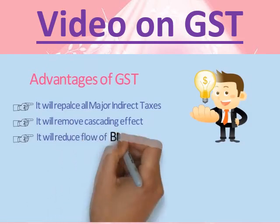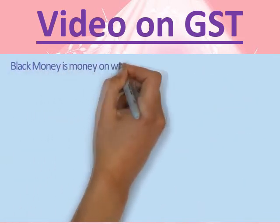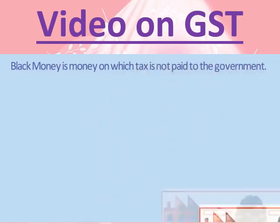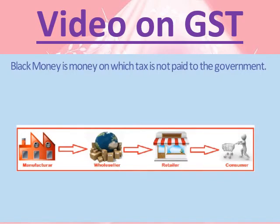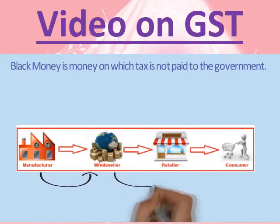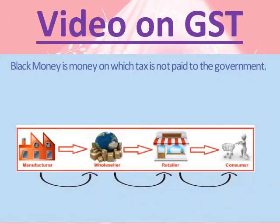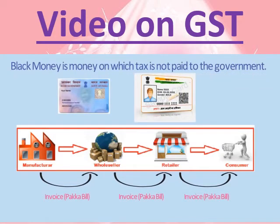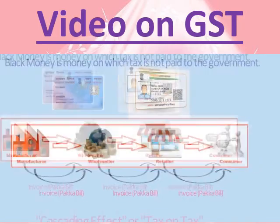GST will reduce the flow of black money in the country. Black money refers to funds on which taxes have not been paid. Some persons understate income by not reporting every transaction, thereby saving on indirect taxes and underreporting income. Under GST, credits of input tax at each stage will be available in the subsequent stage of value addition. To get credit of previously paid taxes, everyone will insist on getting an invoice. GST will have a paper trail accessible by the Income Tax Department, and use of PAN and Aadhaar will be required to file GST returns.